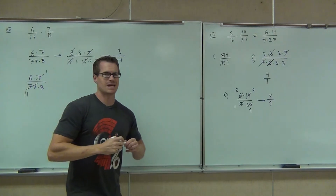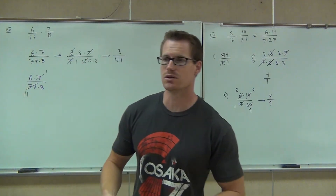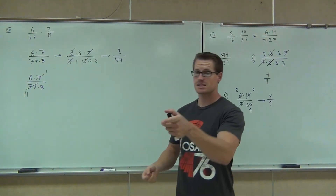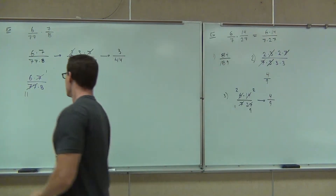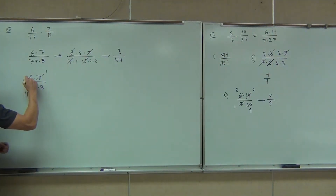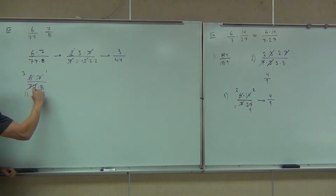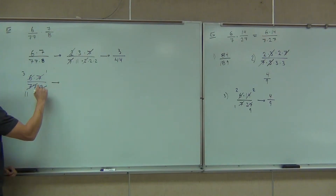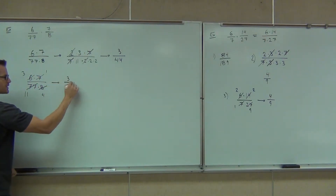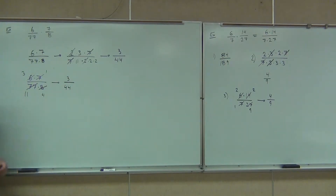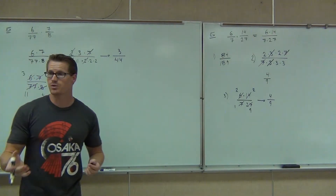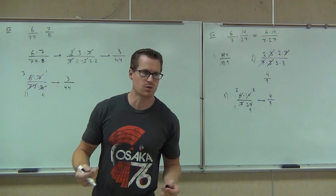We keep going until we can't do that anymore. Is there anything else? Yes — 6 and 8 share a factor of 2. If we divide 6 by 2, that's 3. 8 divided by 2 is 4. Are we going to get the same thing? Yes — 3 times 1 is 3, and 11 times 4 is 44. We get 3 over 44. Either way we do this, we should end up with the same answer — we have to. It's math; there's only one answer.